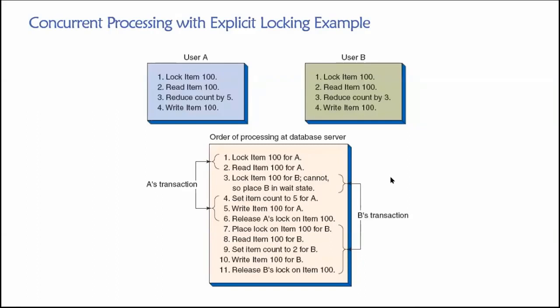Let's see an example of concurrent processing with a lock in place. We have users A and B in the same sort of scenario as before — they are both interested in modifying the number of units in inventory for item number 100. User A was going to reduce the number of units in inventory by five because they sold five of them, and user B was going to reduce the number of units in inventory by three because they sold three of them.